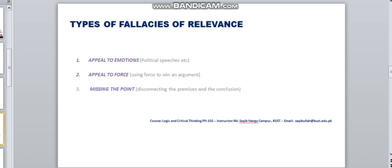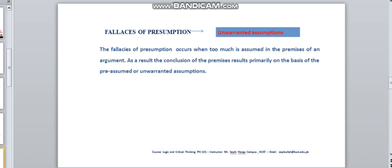Now, coming to the second type of this fallacy, that is Fallacy of Presumption. The Fallacy of Presumption occurs when too much is assumed in the premises of an argument. There are three types of Fallacy of Presumption.